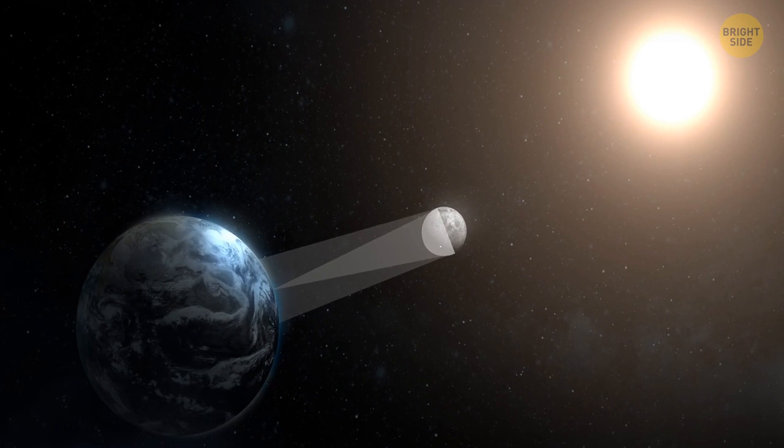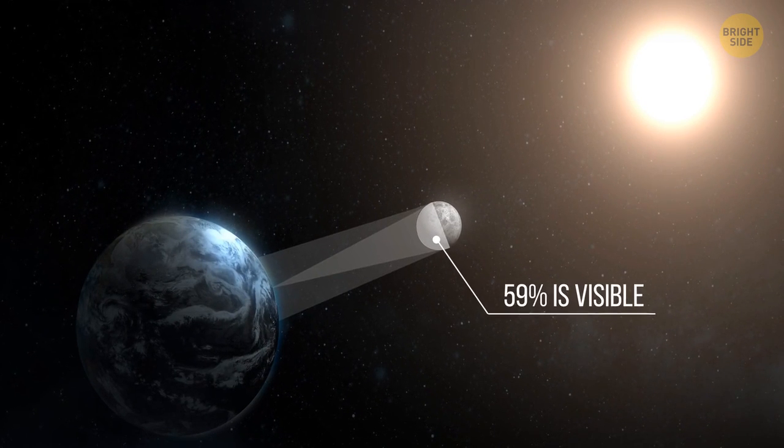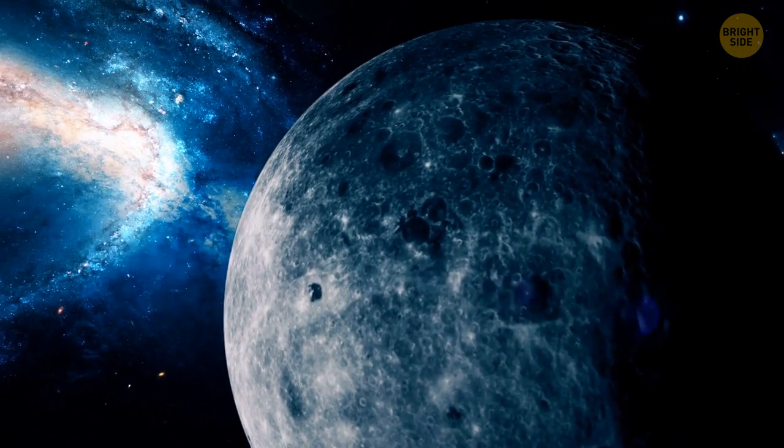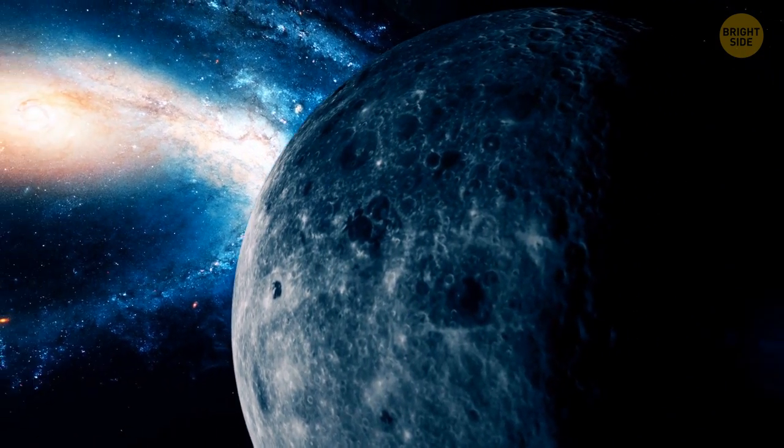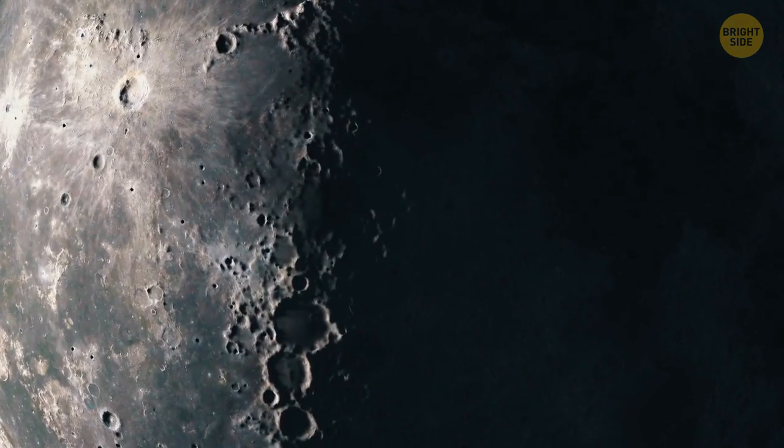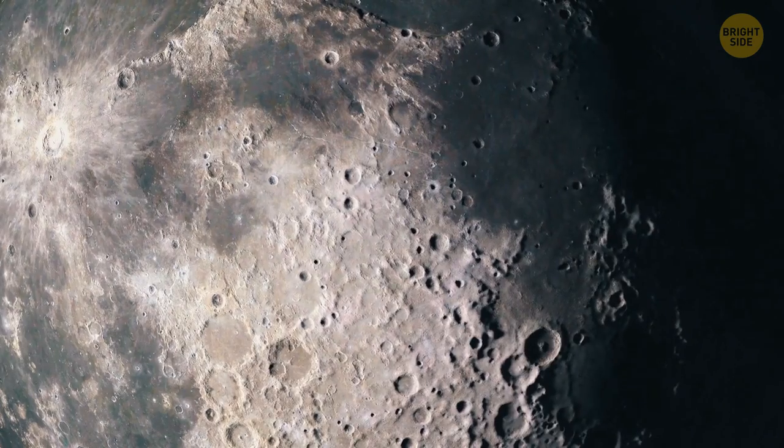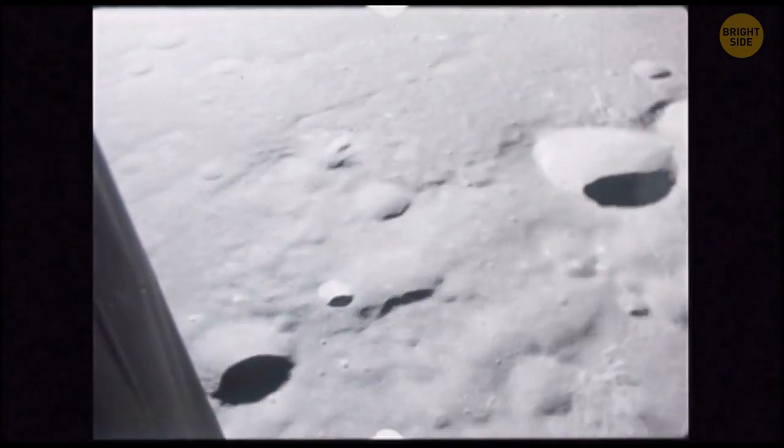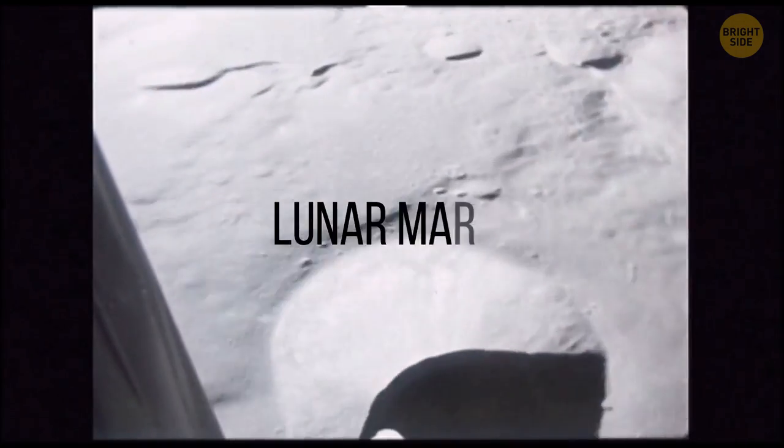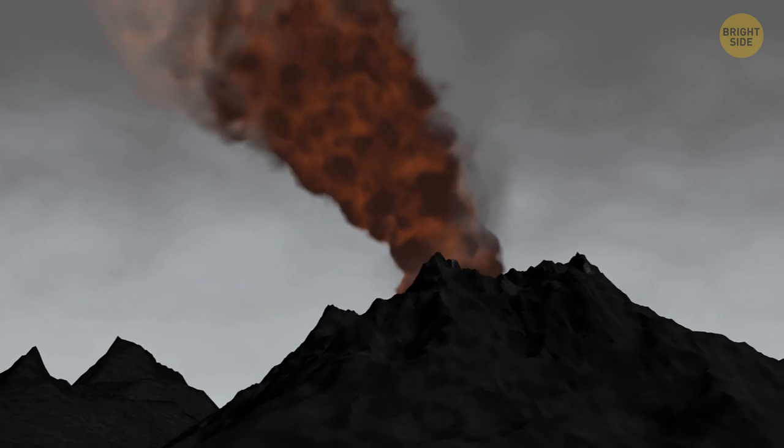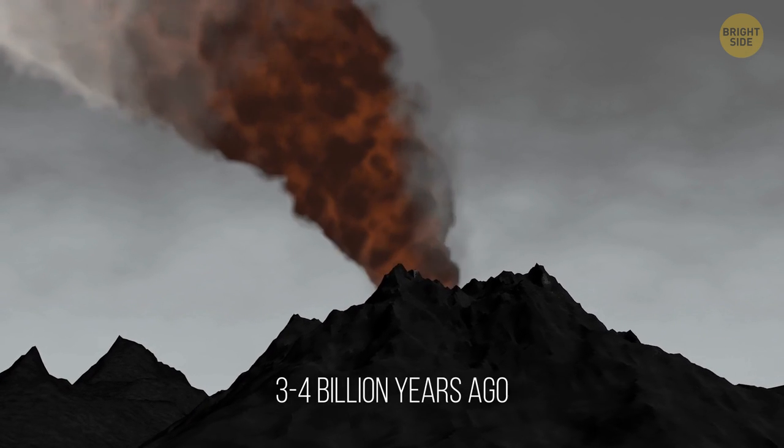To be precise, 59% of the moon's surface is visible to people. It means that you can catch glimpses of the satellite's far side at some times of the year. The moon's side we can't see is quite different from the one facing Earth. It doesn't have dark spots that are visible at night. Those are lunar basaltic plains called lunar maria. They were created by ancient volcanic eruptions that happened about 3 to 4 billion years ago.